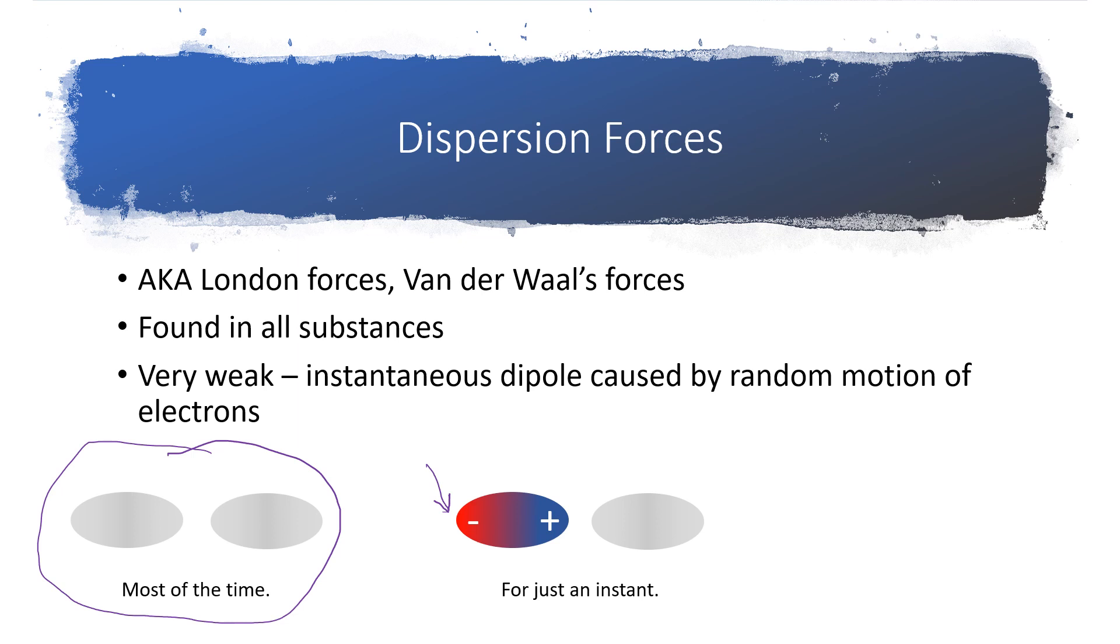And so what will happen in this molecule that's next to it is that since there's a very slight positive charge located on the end of that nearby molecule, the electrons in the next molecule will be attracted. And so just for an instant, the adjacent molecule's electrons get pulled over to the left hand side, and we get this very weak attraction between the slight positive charge on one and the slight negative charge on another.